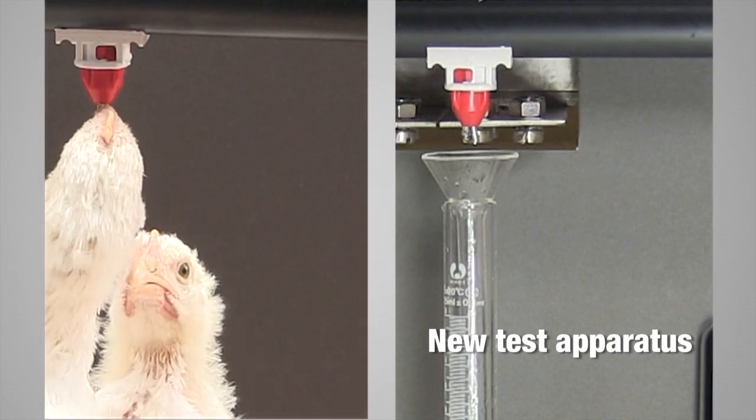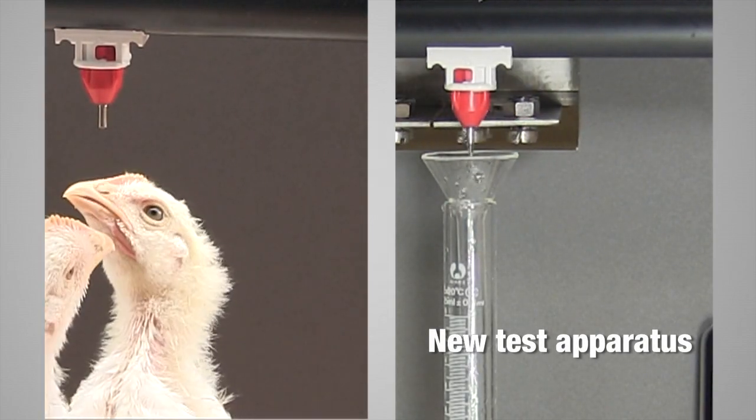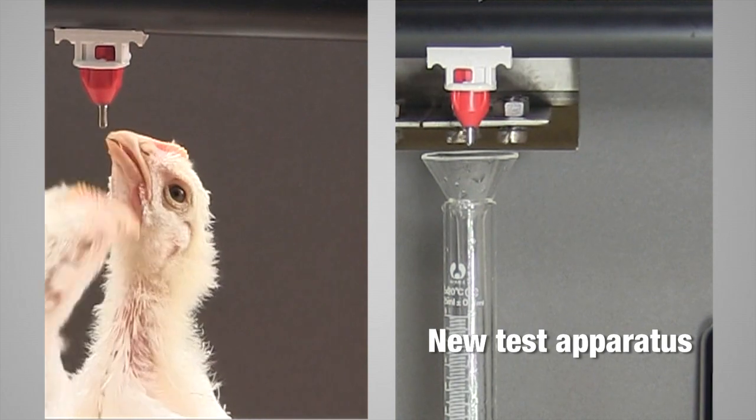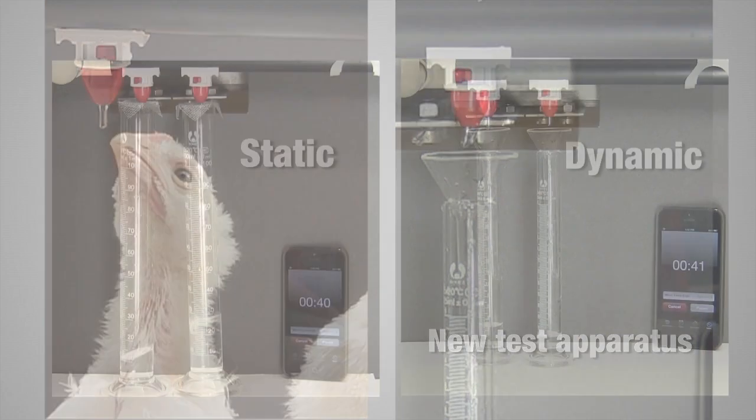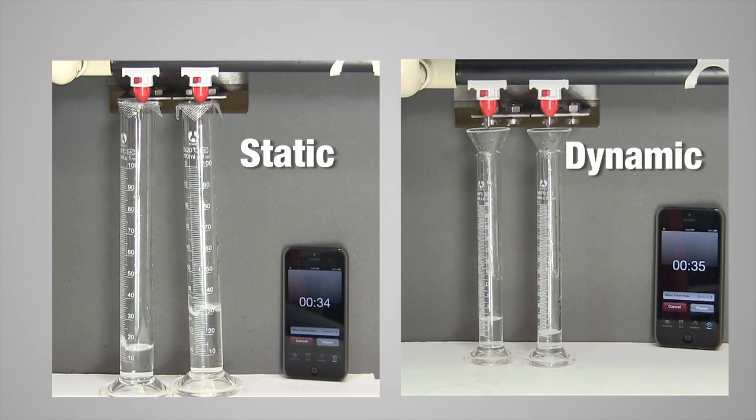First, the team developed a machine that produces a triggering action that is similar to the way a bird actually drinks. We will test drinkers for their dynamic and static flow rates. Let's review the tests.